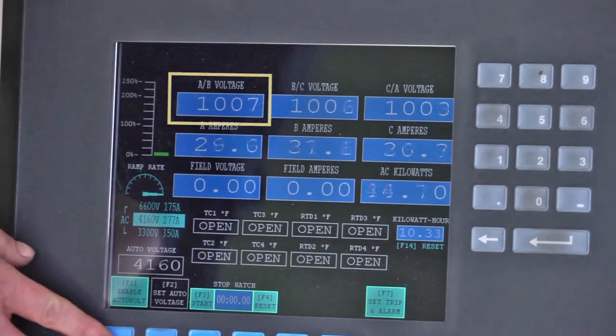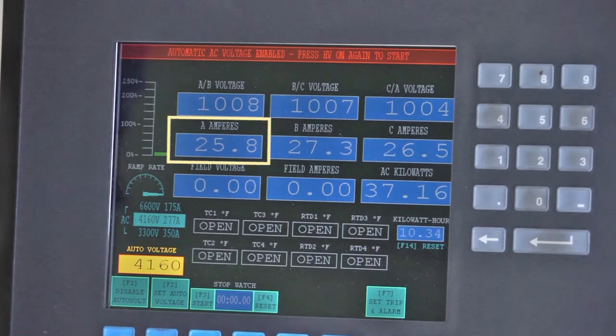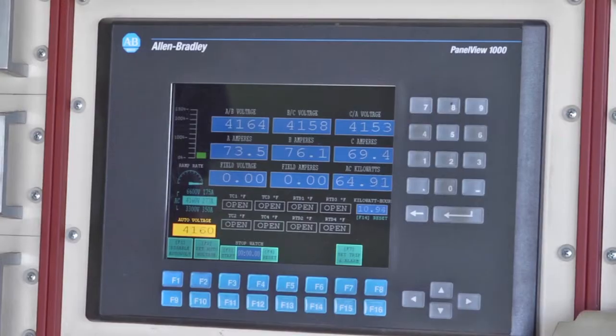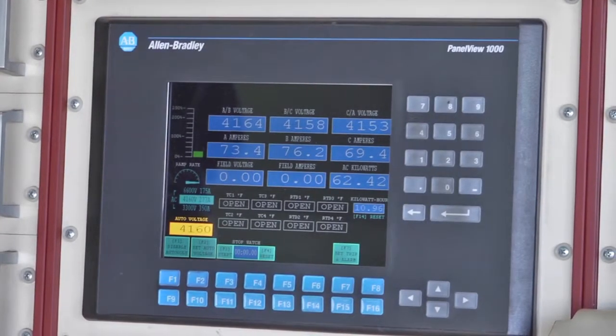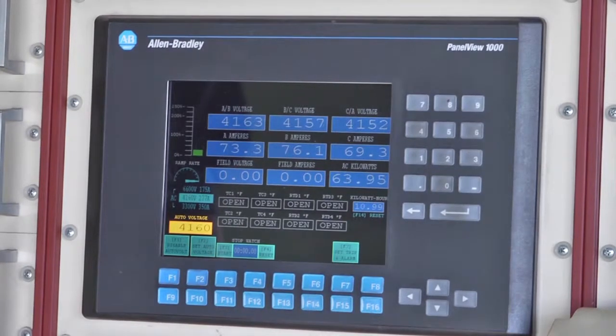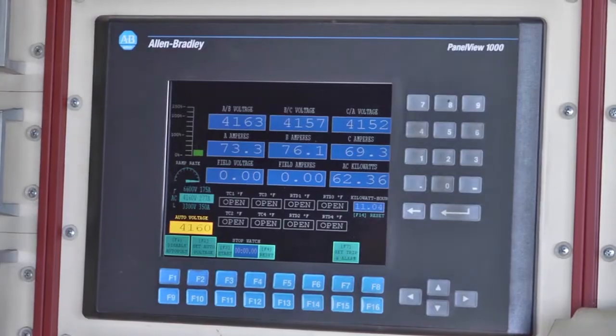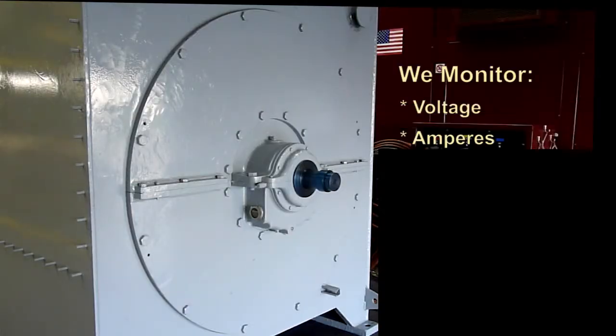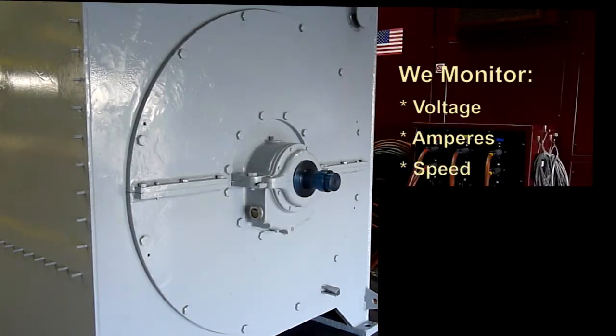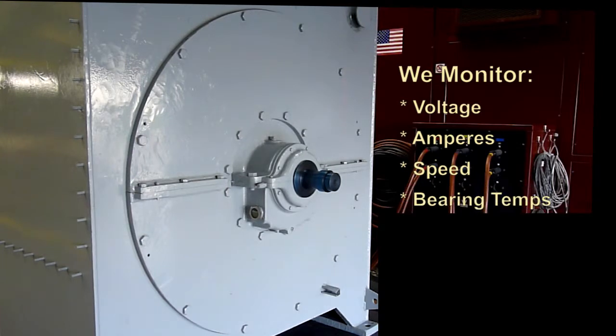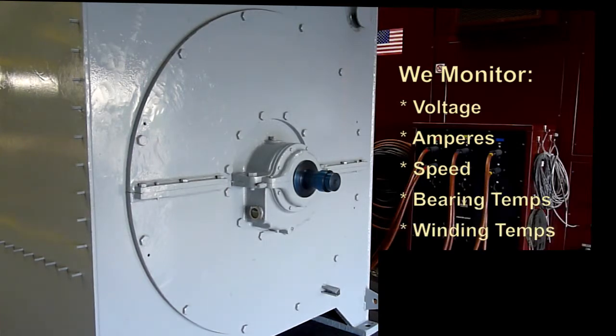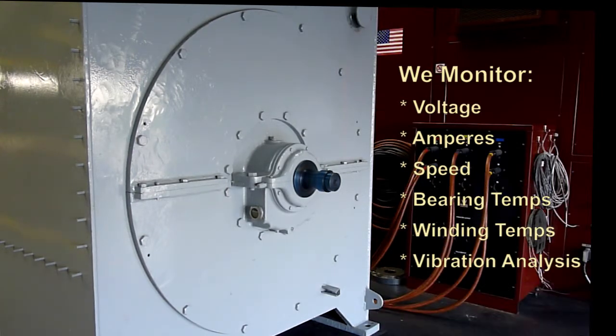The voltage is being applied on the top. The second is the current. And once it's up to speed, the computer will now read the voltage, the amperes, and the speed, the varying temperatures, winding temperatures, and also the vibration analysis all in the computer program.